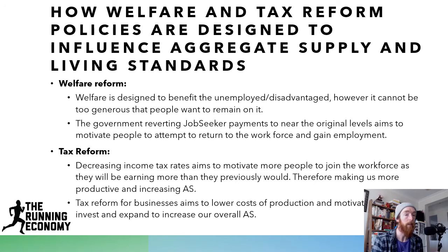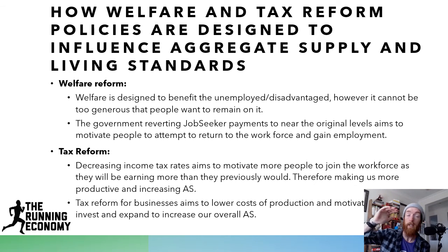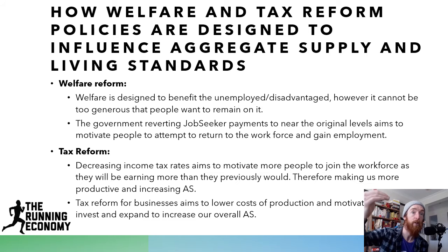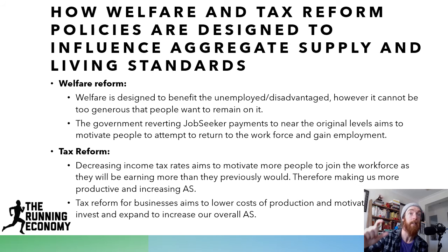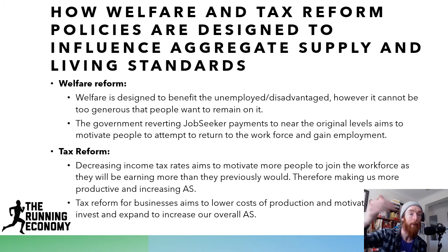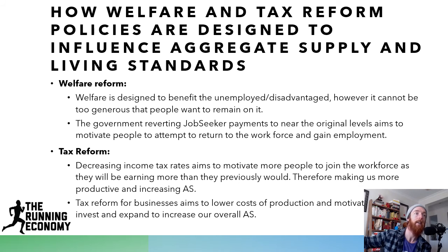Welfare and tax reform: welfare is designed to benefit the unemployed and disadvantaged, but cannot be so generous that people want to remain on it. The government took JobSeeker to a very generous amount initially where there weren't jobs available, then slowly decreased that amount over time — as that amount decreases, people are motivated to join the workforce where they'll earn higher income and be more productive members of the workforce. For tax reform, decreasing income tax rates motivates people to join the workforce. Examples include the $1,080 tax offset for lower-middle income earners, which motivates people to work harder — more output per hour worked, increasing aggregate supply. Business tax being cut from 30% to 25% lowers cost of production, motivating businesses to invest and expand, therefore increasing overall aggregate supply.